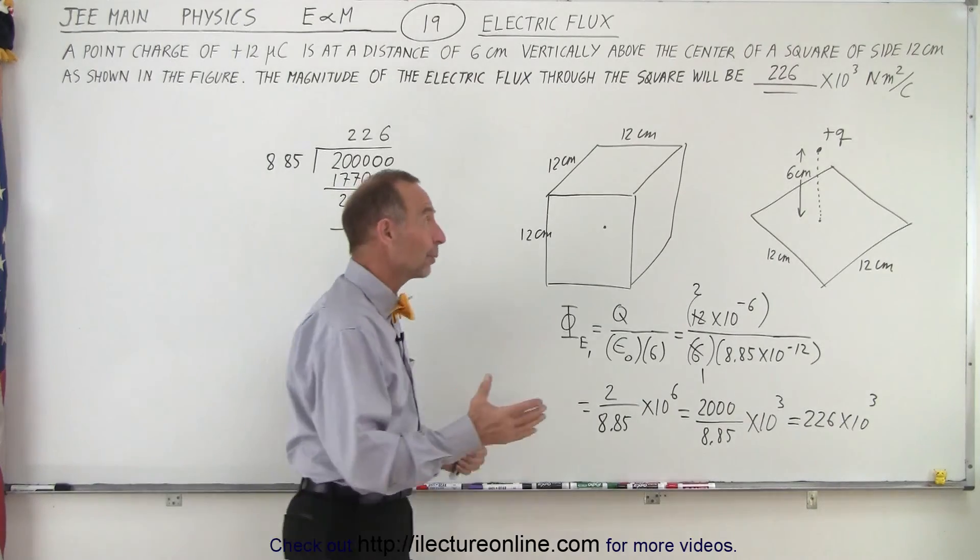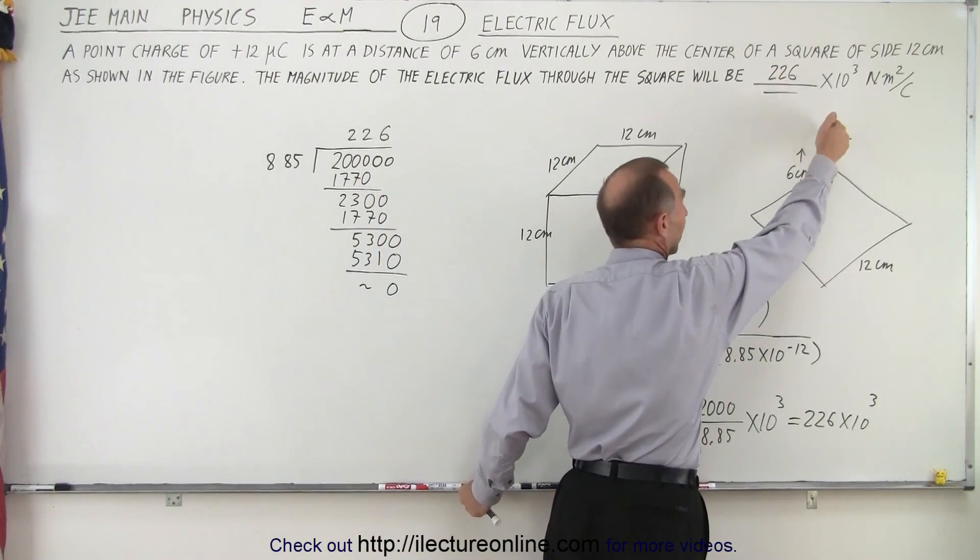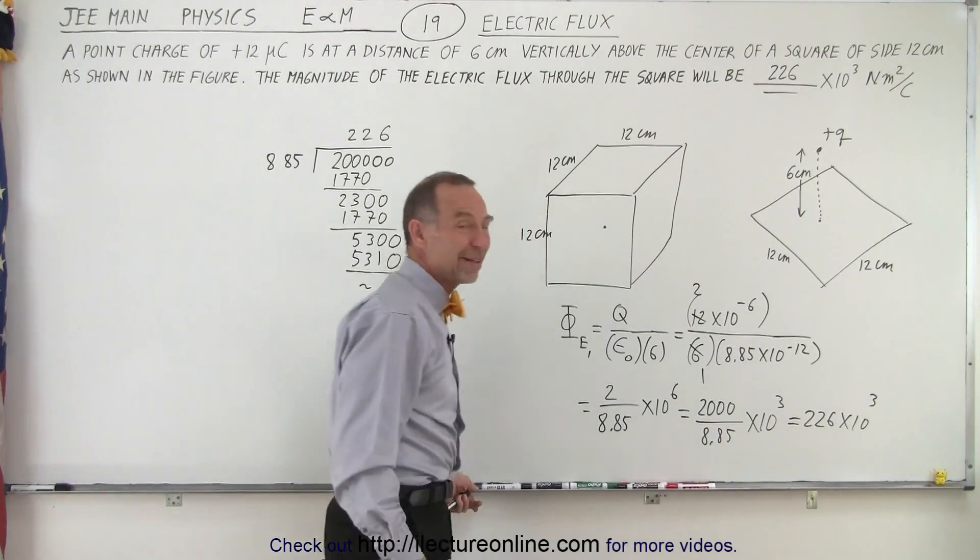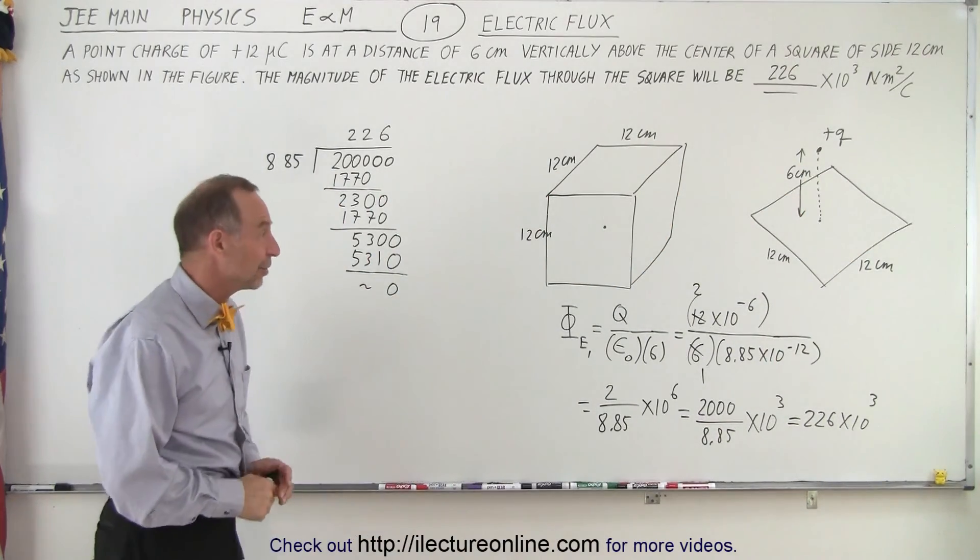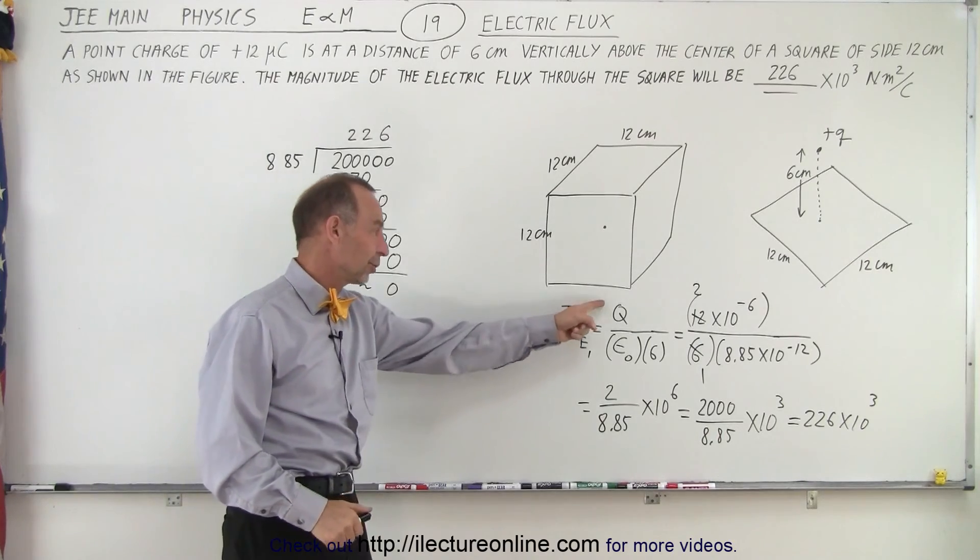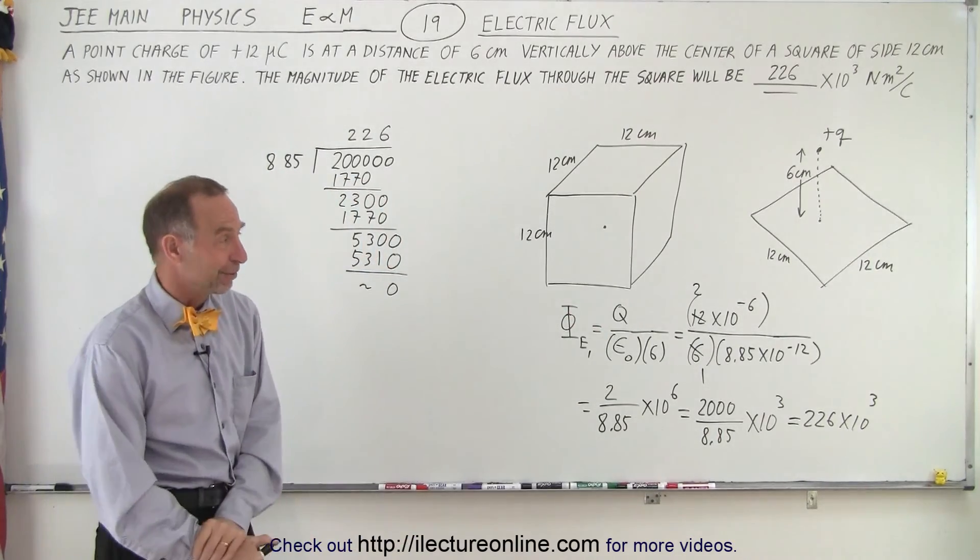But that's how it's done. And again, notice how simple the problem became. Otherwise, we'd have to take the charge and then integrate it over the area. That would just be a really messy integral. It would take you a long time to do. It's a lot easier to use Gauss's law and the concept that the flux is equal to q over epsilon sub nought. And that is how it's done.